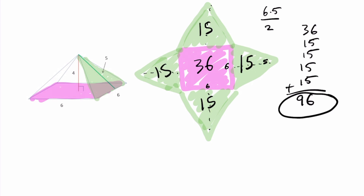We've covered all those different parts — the bases, lateral faces — and if we want to make a net, we just imagine unfolding each of those faces. Finally, we can find the surface area by adding all those areas together.